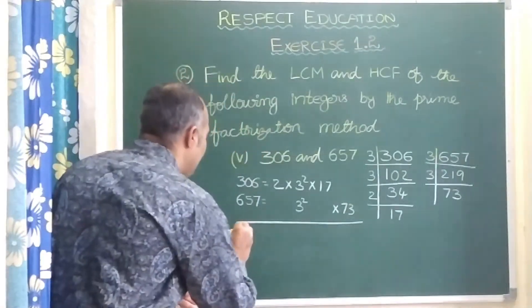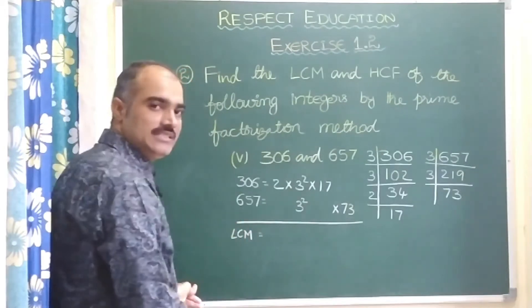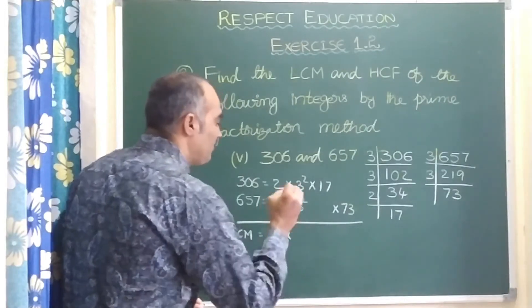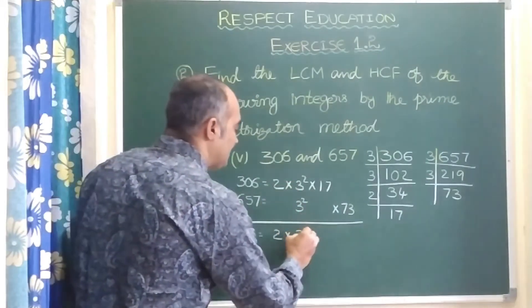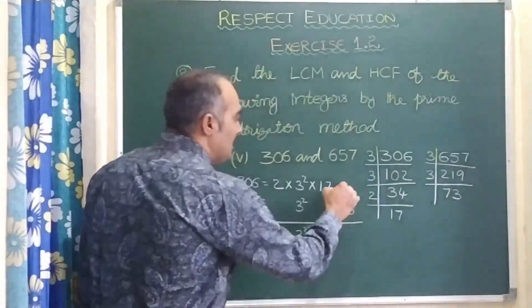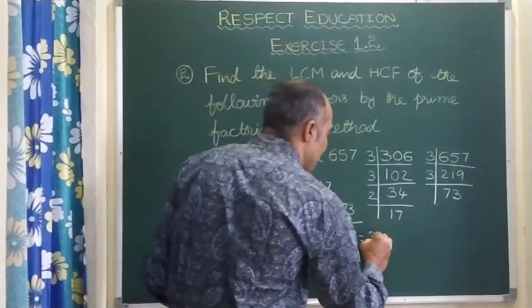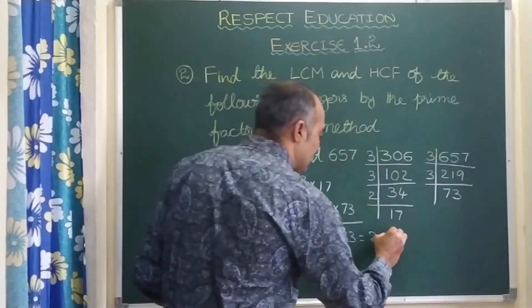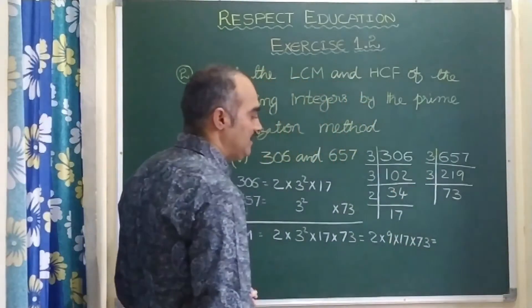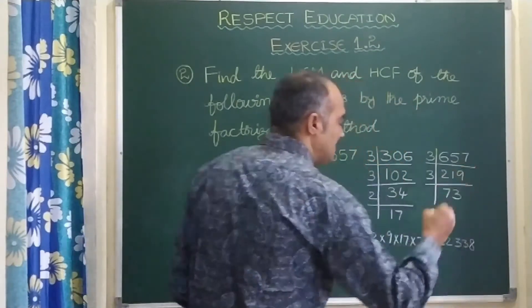Now we are going to find the LCM first. As we discussed earlier, L stands for least, but we should take the highest power. For 2: 2 power 1 and nothing — we take 2 power 1. For 3: 3 square and 3 square — highest is 3 square. For 17: 17 power 1 and nothing — highest is 17 power 1. For 73: nothing and 73 — highest is 73. So it is 2 into 3 square, which is 9, into 17 into 73. The LCM is 22,338.